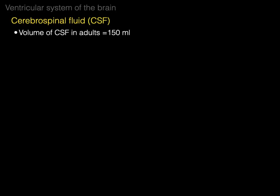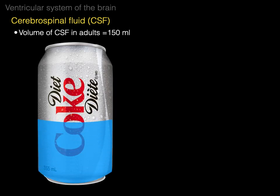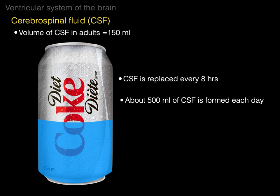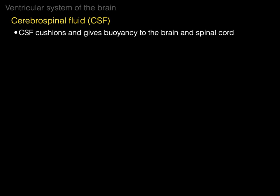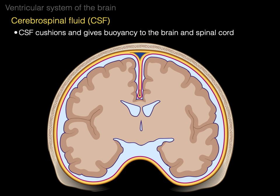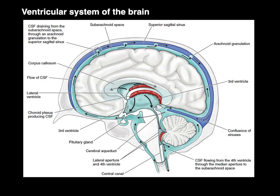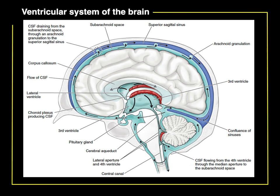CSF volume in adults is about 150 milliliters — less than half a can of Coke. CSF is replaced about every eight hours, and about 500 milliliters of CSF is formed each day. CSF cushions the brain and spinal cord and gives buoyancy — the brain has a consistency almost like jelly, and so the CSF gives buoyancy, reducing the weight of the brain and spinal cord by about 97 to 98%, and it cushions it. In the coronal section, you can see the CSF inside and outside the brain, and how it buoys up the brain and helps cushion it from hitting the side of the skull. That is the ventricular system of the brain in a nutshell.